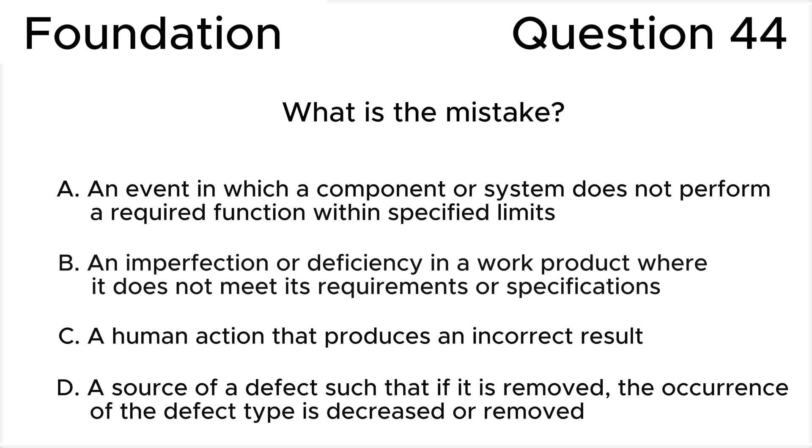What is the mistake? A. An event in which a component or system doesn't perform a required function within specified limits. B. An imperfection or deficiency in a work product where it does not meet its requirements or specifications. C. A human action that produces an incorrect result. D. A source of a defect such that if it is removed, the occurrence of the defect type is decreased or removed.